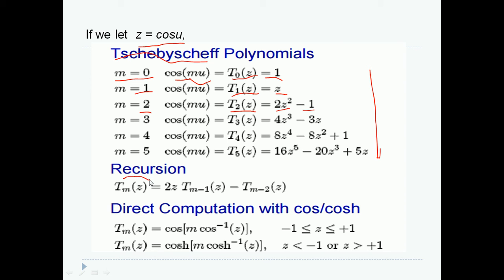Through recursion, I can write a generalized formula for Tm(Z). That is nothing but 2Z Tm minus 1 function of Z, Tm minus 1, minus Tm minus 2(Z).